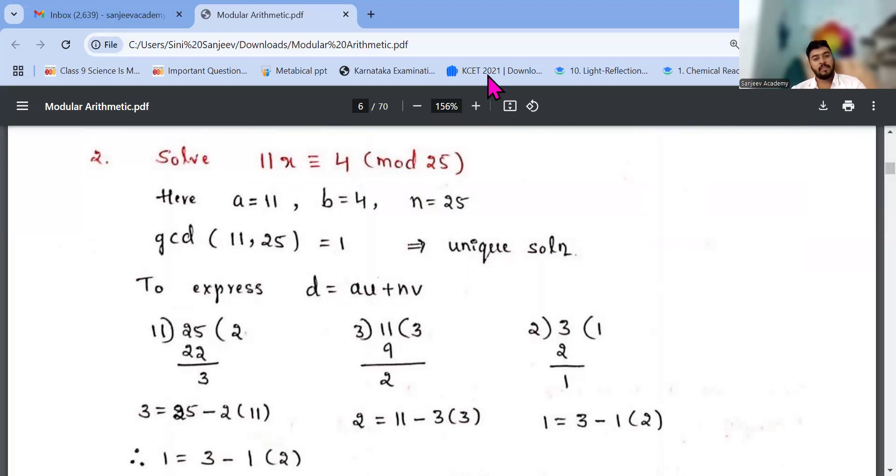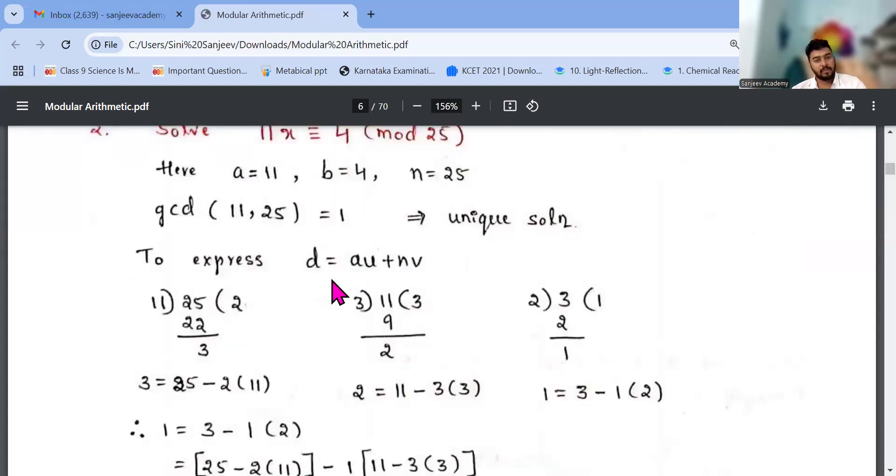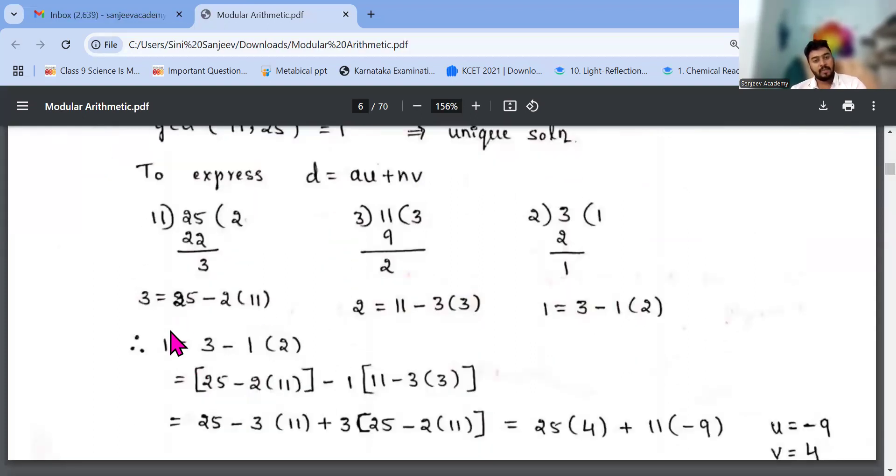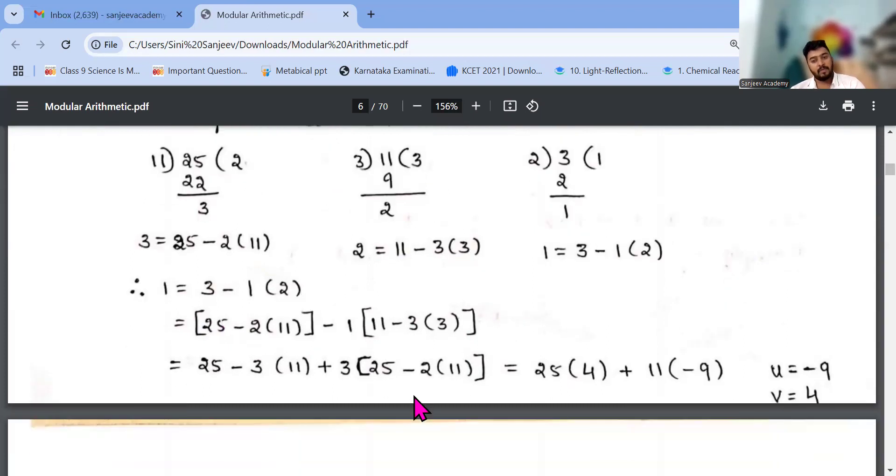Similar to the next question also. 11x congruent to 4 mod 25. a is 11, b is 4, n is 25. gcd of 11 and 25 is 1. Unique solution. Do the same method. 1 equals 3 minus 1 into 2. Now what is my 3? 25 minus 2 times 11. And what is my 2? 11 minus 3 times 3. Substitute everything, you will get u and v value. Pause the video and see it. Do it, then only you will understand.